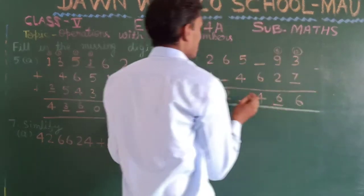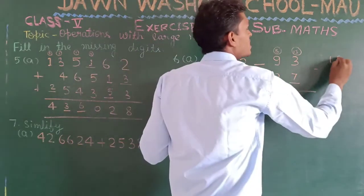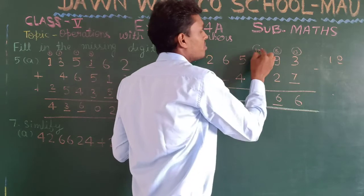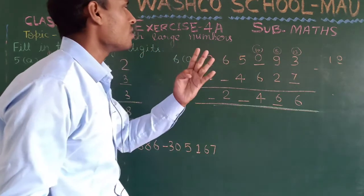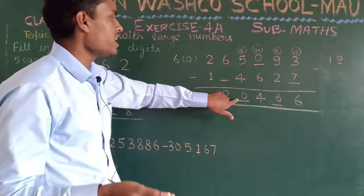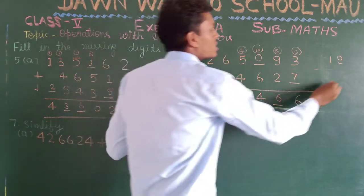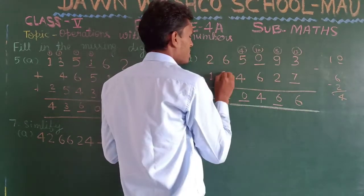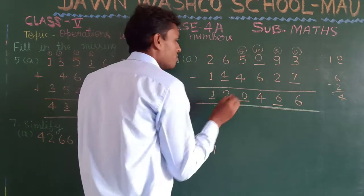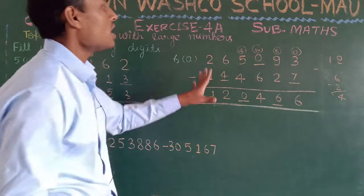We have 10 but only one digit space, so we write 0 and carry 1. Then 10 minus 6 gives 4. Since we borrowed, this becomes 4 and 4 minus 4 gives 0. Next: 6 minus what gives 2? Six minus 4 gives 2, so write 4 here. Then 2 minus 1 gives 1. The answer is one lakh twenty thousand four hundred sixty-six.